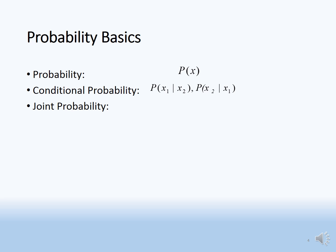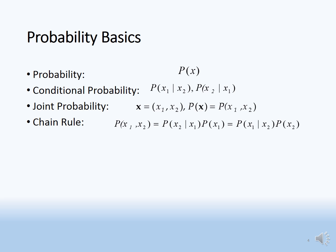Joint probability: the probability of x1 and x2 together is called joint probability. Using the chain rule, joint probability of x1 and x2 equals probability of x1 times probability of x2 given x1, or equivalently probability of x1 given x2 times probability of x2.